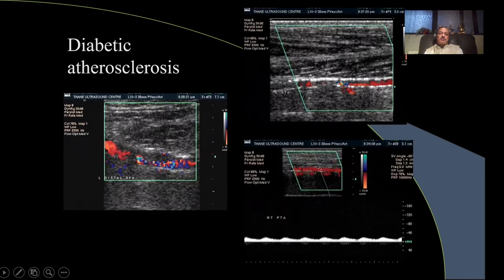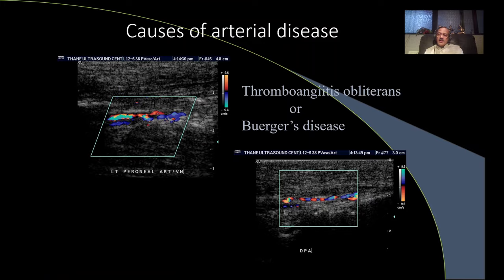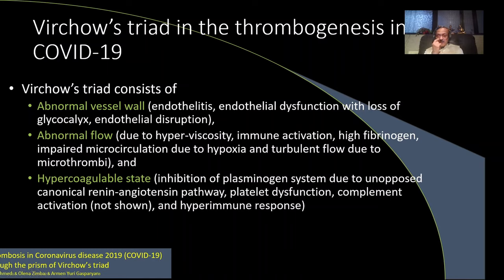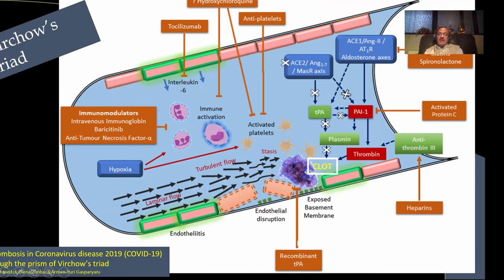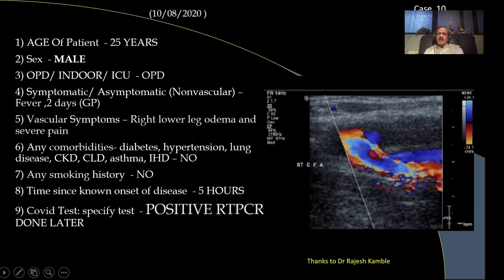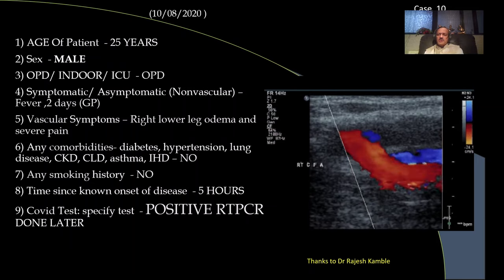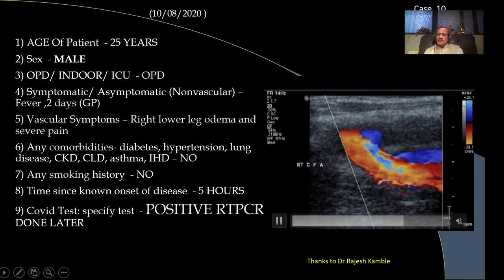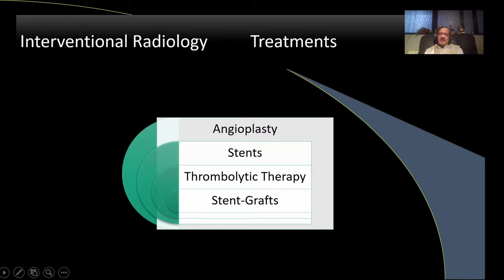Common causes include atherosclerosis and diabetic atherosclerosis — typically with a lot of calcification in the wall. Buerger's disease is not very common in the lower limb but occasionally seen, with markedly thick-walled arteries resembling umbilical arteries. More recently, COVID-19 has been presenting as lower limb ischemia and thrombosis due to multiple prothrombotic factors. An example is a young person from our clinic who presented with leg ischemia of only a few hours duration, had total SFA occlusion, and was subsequently COVID-positive.